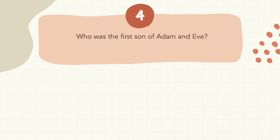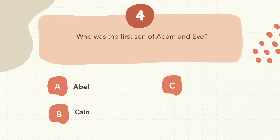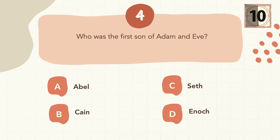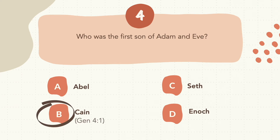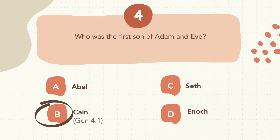Question 4: Who was the first son of Adam and Eve? The correct answer is B, Cain.